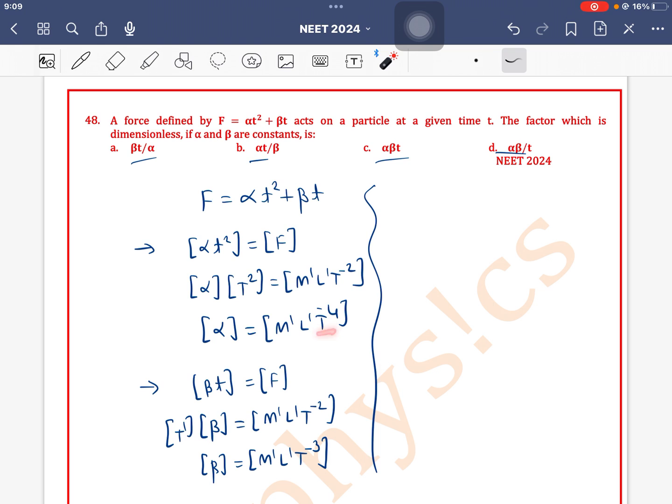After that, t to power minus 4 and t to power minus 3 remain. If we take their ratio, we get either minus 1 or plus 1. So let's check the option alpha t by beta. What is its dimension?